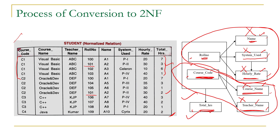In this session we concluded that the given database is not in second normal form because non-key attributes like name, system used, and hourly rate depend on the subset roll number, and course name and teacher name depend on the subset course code, while total R is fully functional dependent on the primary key. Due to these partial dependencies we have insert, update, and delete anomalies. To convert this table into second normal form using the rule of decomposition, please watch the next video session. Thanks for watching.